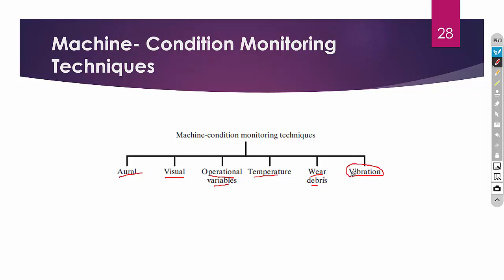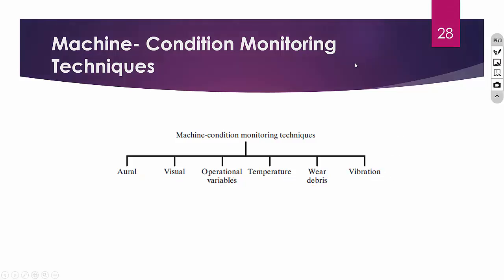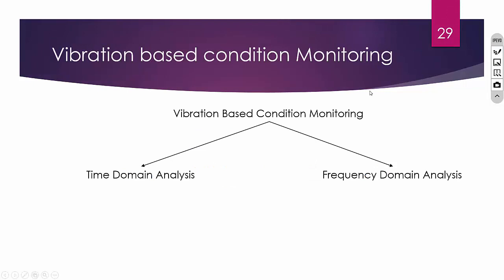Finally, the most important condition monitoring technique is vibration-based monitoring. We monitor the vibration of the machinery, and when vibration exceeds some limit we identify and rectify the fault. Vibration-based condition monitoring is further split into two types: time domain analysis and frequency domain analysis.